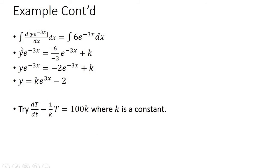This leads to integration of the right side. When you integrate 6 · e^(-3x) with respect to x, the -3 comes out as a reciprocal in the denominator, so you get 6 over -3, which gives us -2, and the expression e^(-3x) comes as it is, plus the constant of integration K.